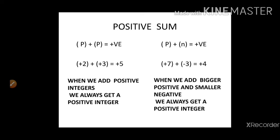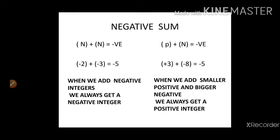Now for a negative sum — when will we get the sum as negative? There are two ways. First, negative plus negative always gives a negative: two negatives and three negatives gives five negatives. Second, small positive and big negative — when the number of positives is less and number of negatives is more. For example, plus 3 and minus 8: only three positives but eight negatives, so the answer is always negative.